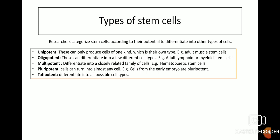Unipotent cells can only produce cells of one kind — their own type. For example, adult muscle stem cells. Oligopotent stem cells can differentiate into a few different cell types, for example adult lymphoid or myeloid stem cells. Multipotent stem cells differentiate into a closely related family of cells, for example hematopoietic stem cells. Pluripotent stem cells can turn into almost any cell — for example, cells from the early embryo are pluripotent. Totipotent cells can differentiate into all possible cell types.